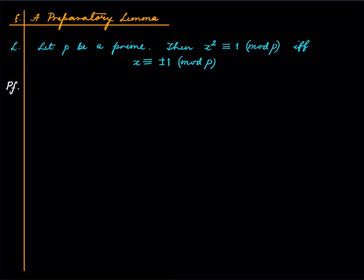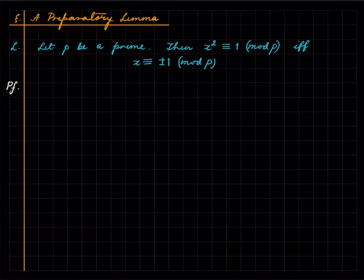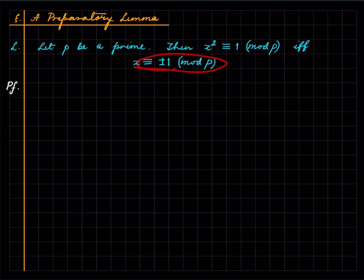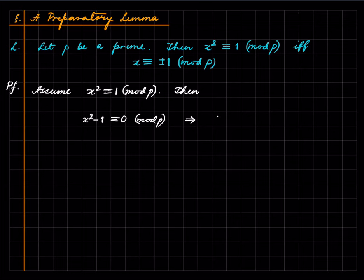Okay, so before we state Wilson's theorem we have a very simple preparatory lemma. We want to show that if p is a prime and we have some x which satisfies x² ≡ 1 (mod p), then x will satisfy x ≡ ±1 (mod p). So assume we have x² ≡ 1 (mod p), then x² - 1 ≡ 0 (mod p), which is the same as saying that p divides x² - 1, which means p divides (x-1)(x+1), which means that p divides x-1 or p divides x+1.